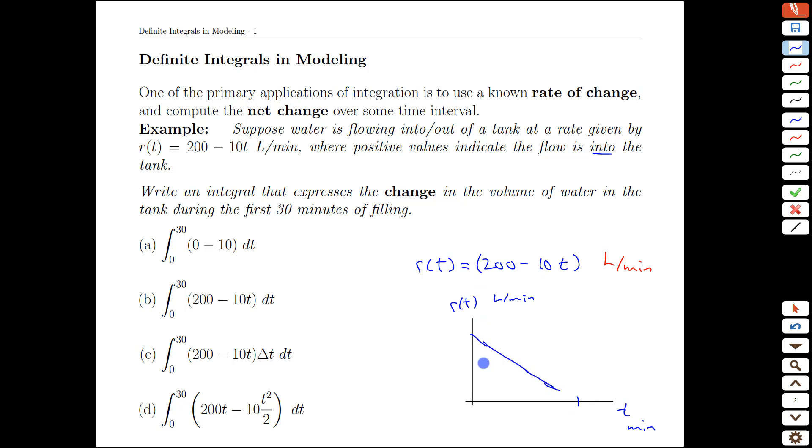Turns out it's a linear decay graph, that doesn't really matter. What we care about is how we would go from this to a change in volume. Well a change in volume is a number of liters. So imagine shading out the region underneath this graph.